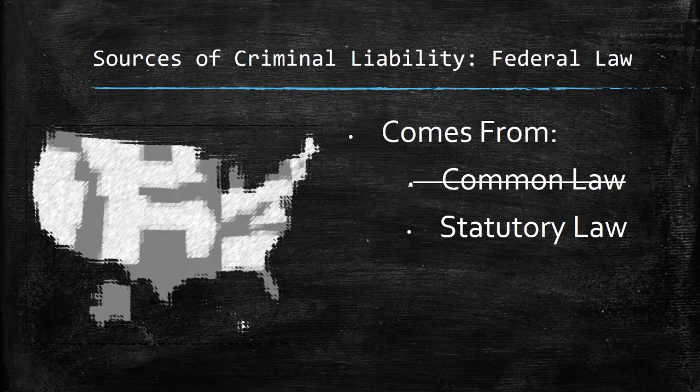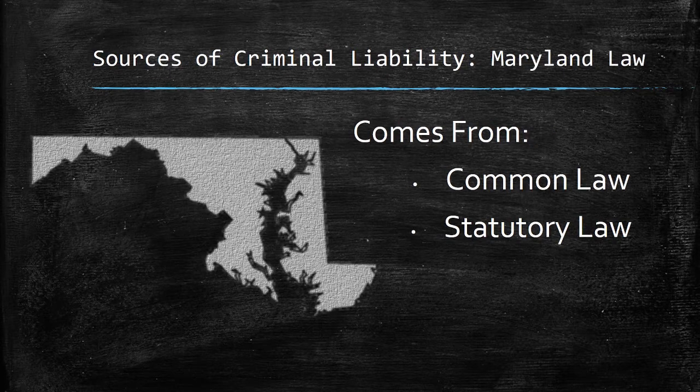Federal criminal law only comes from statutes — there is no federal common law. There are traditions and reasons certain statutes were enacted, but there is no direct connection between English law and federal law; it is wholly statutory. Maryland, on the other hand, has in its constitution a specific provision that entitles the people of Maryland to the common law of England, except for things modified by the legislature as statutes. So Maryland not only has common law, we have a constitutional right to it under our state constitution, in addition to statutory law passed by the Maryland General Assembly.